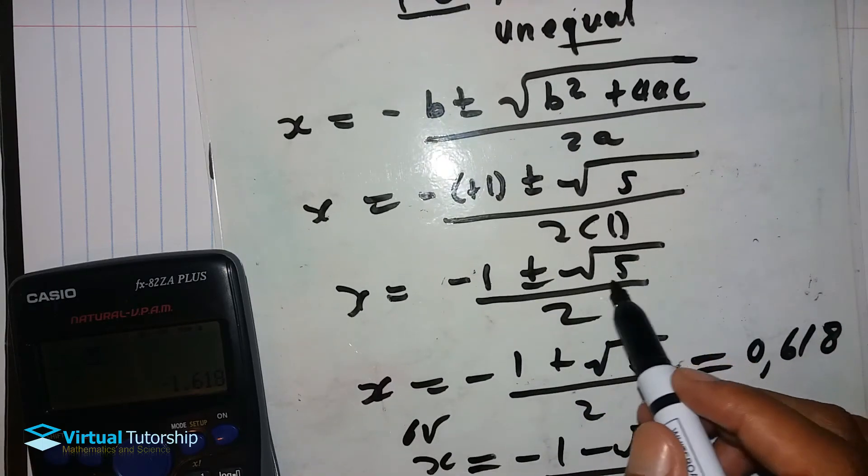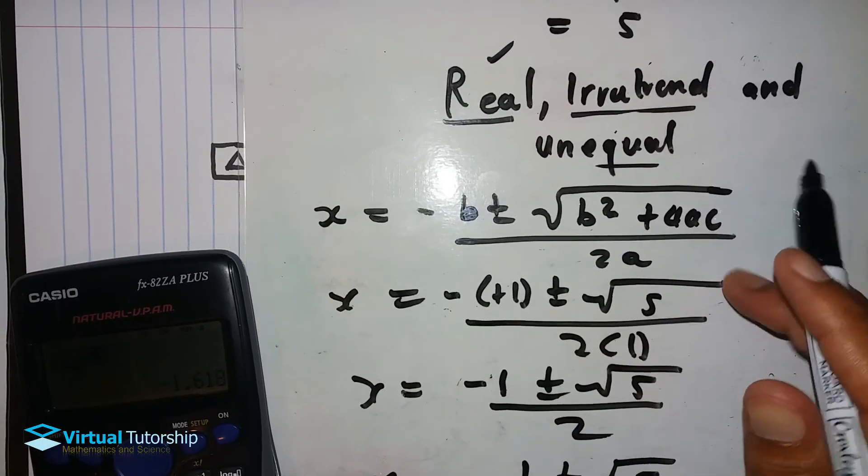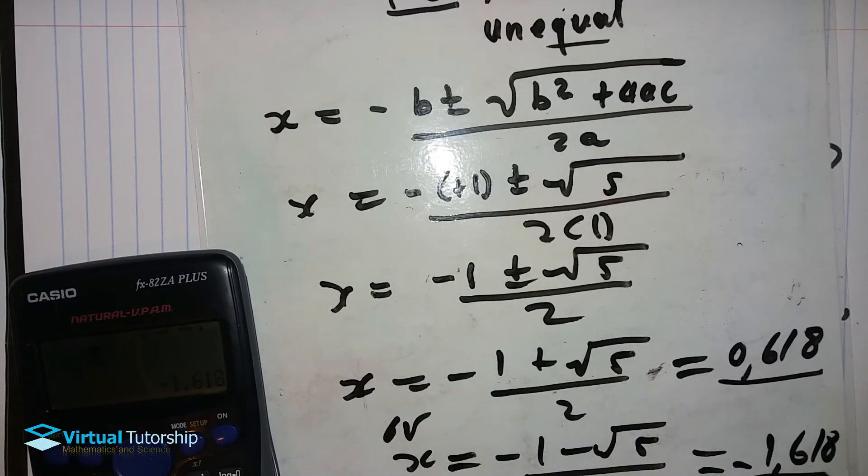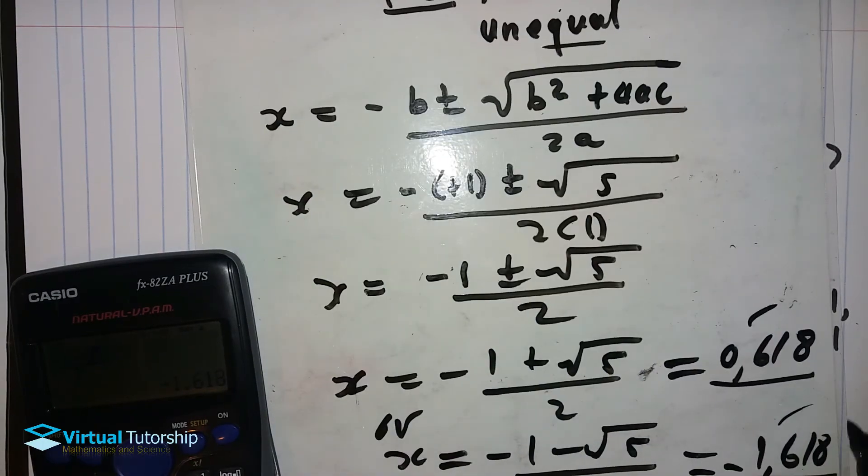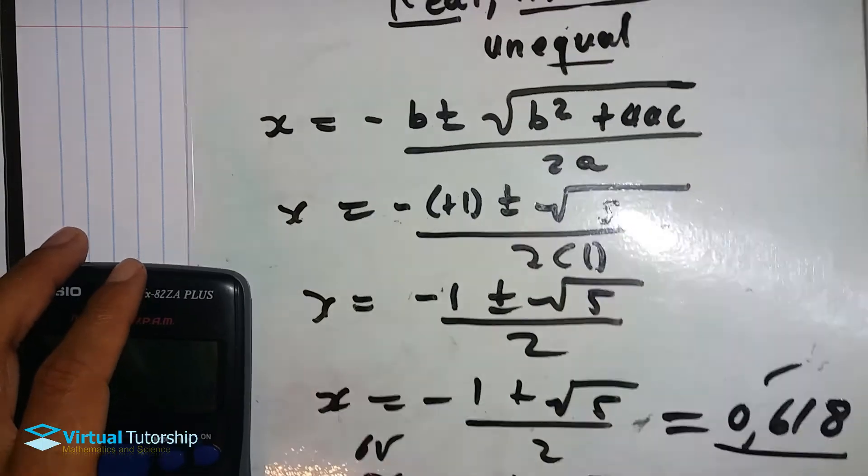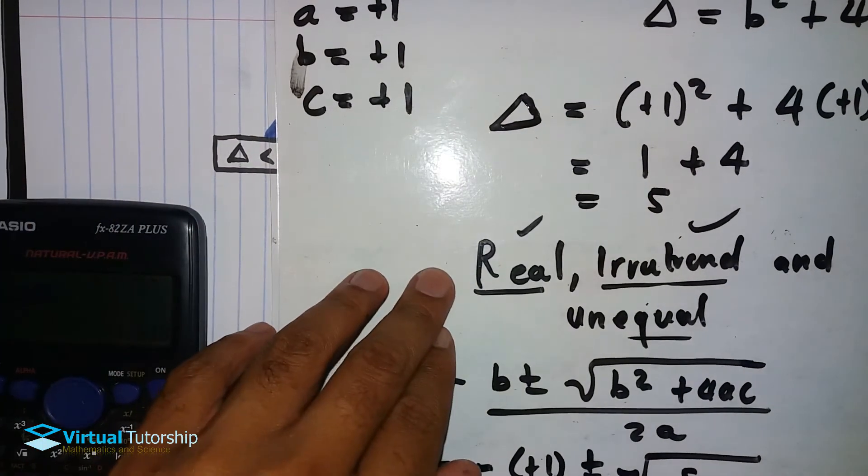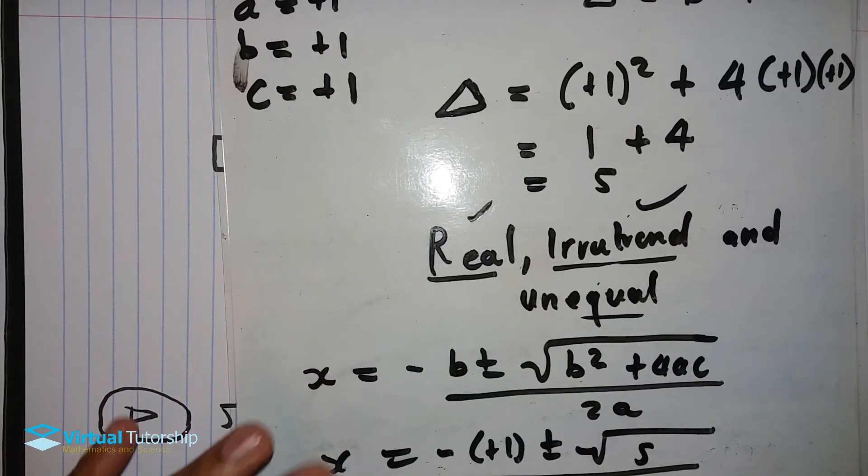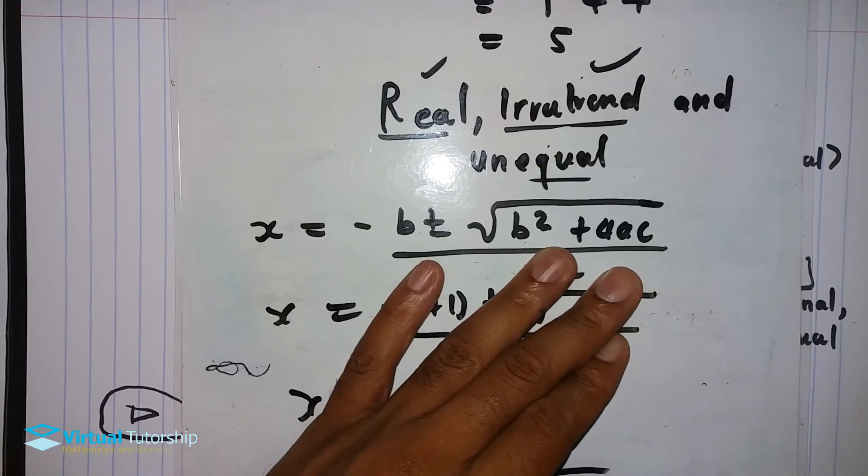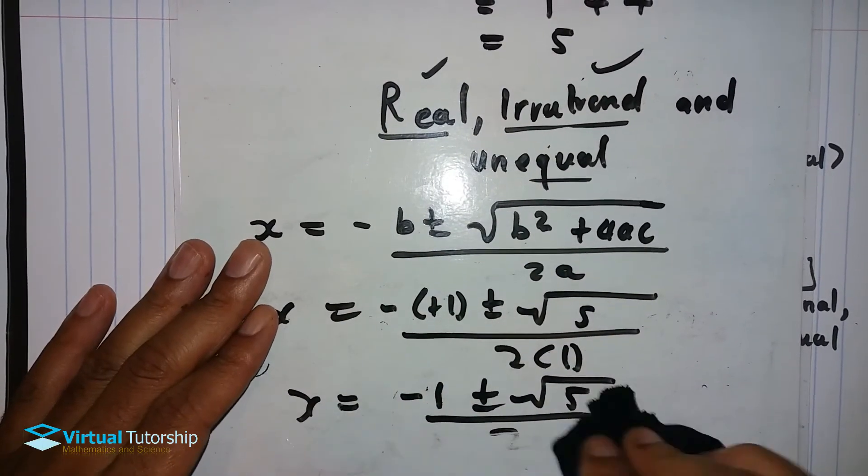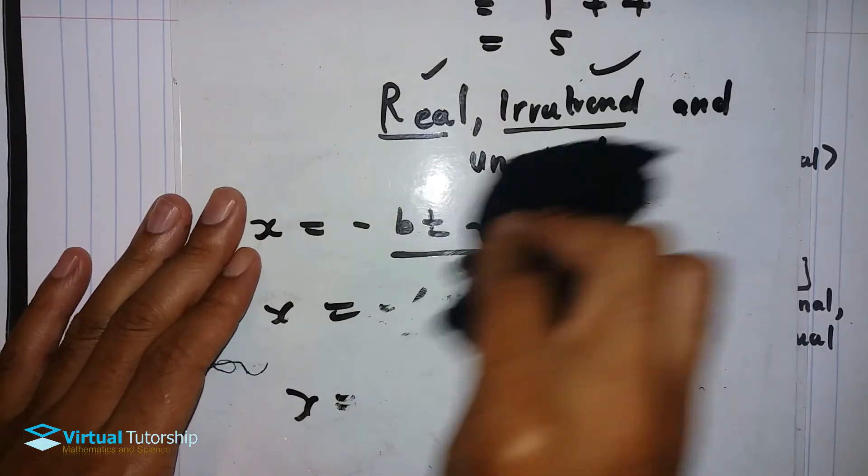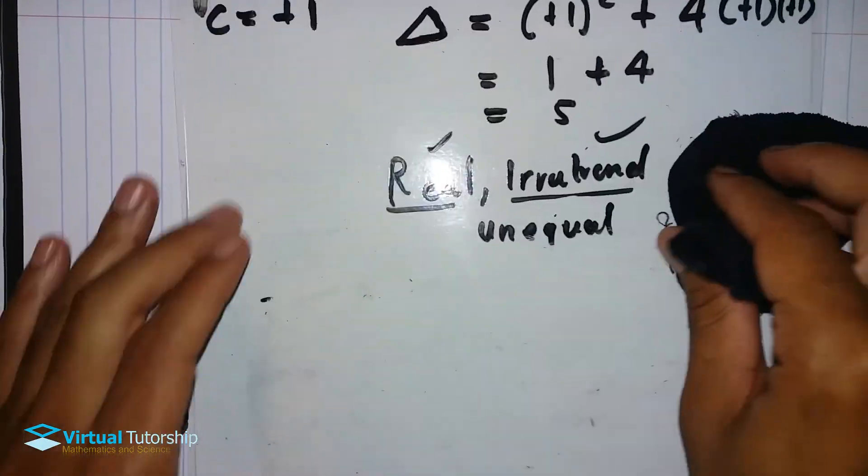The solutions are real, yes, because the number under the square root is positive. Irrational, yes, with decimal numbers. Unequal - the roots are unequal. Each of the roots is different. Instead of just solving them, the delta tells you, before you solve the equation, what the roots are.